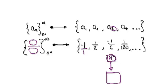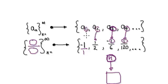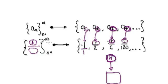Starting with any n, we have to somehow generate the numerator. When n is 4, when n is 2, when n is 3 — no matter what n is, the numerator is always 1. So it's sensible to guess the numerator is simply 1.